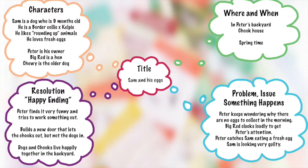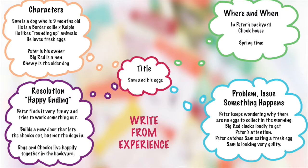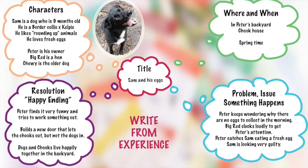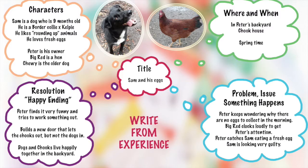The best thing about this story is it has been written from personal experience. Sam is actually our dog. Peter actually did catch Sam with an egg in the backyard. And there's Sam, and there's Big Red, one of our chickens. If you write from personal experience, or from something you've heard happen from a friend or family member, it makes the story so much more believable.